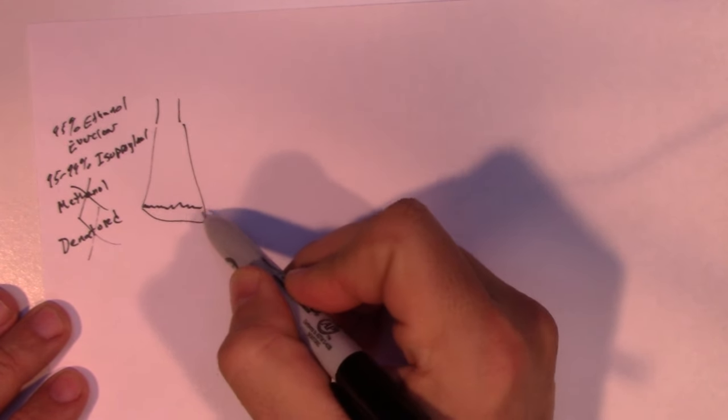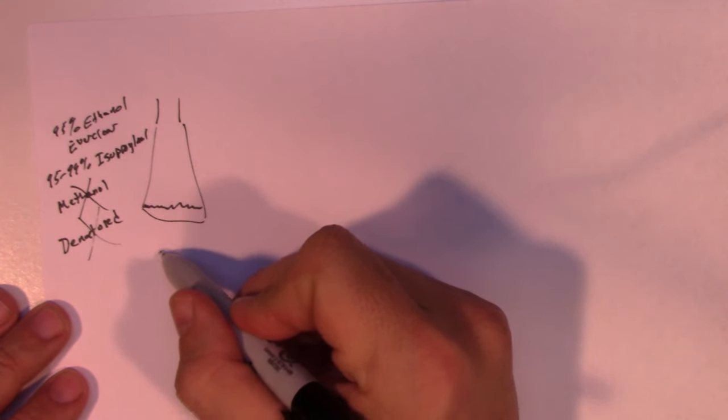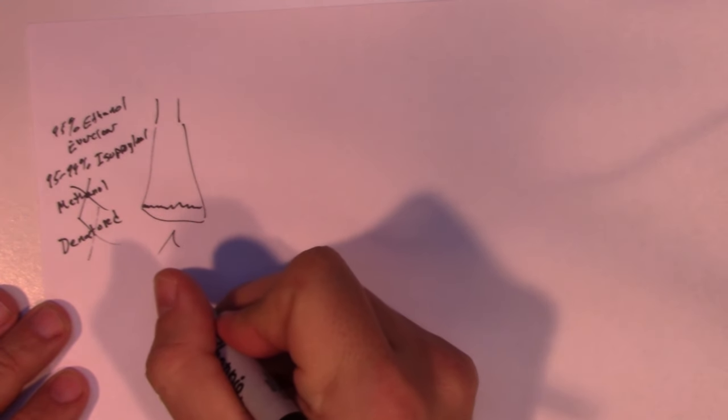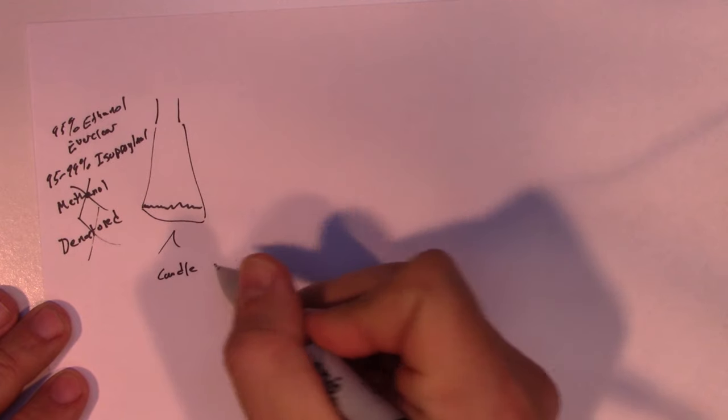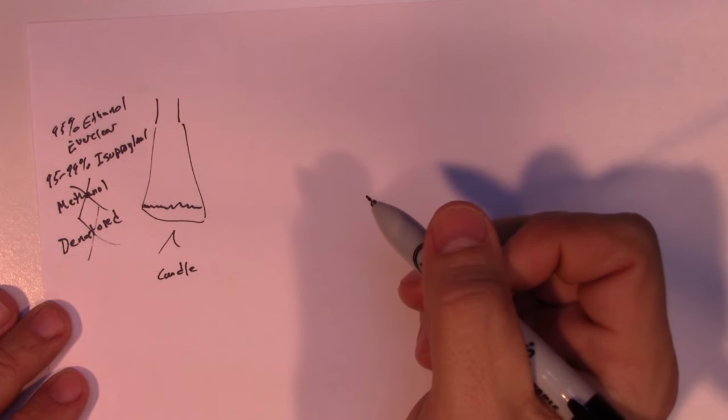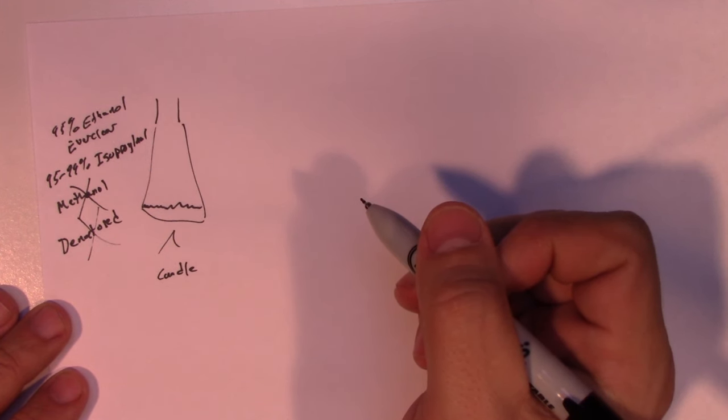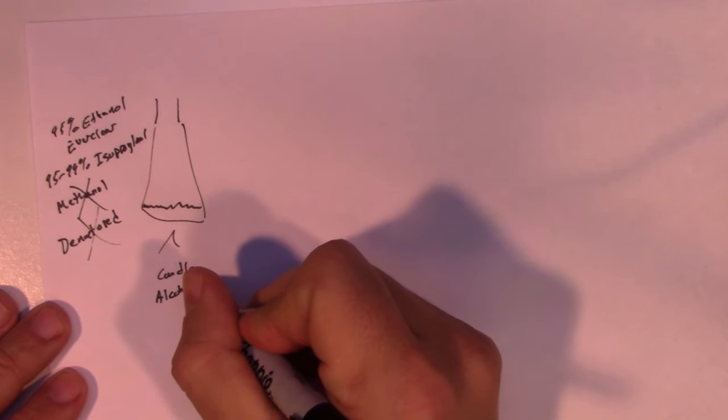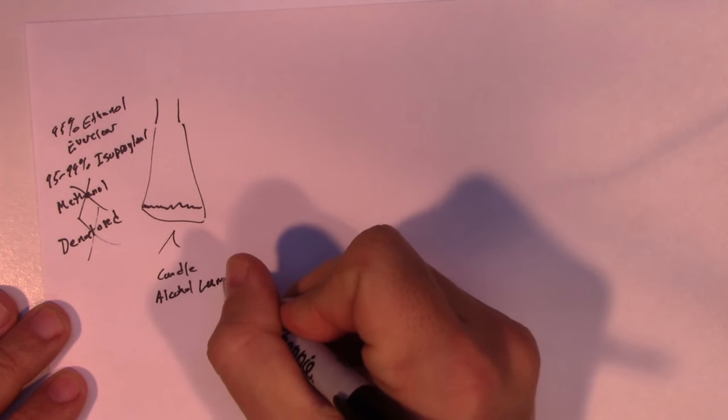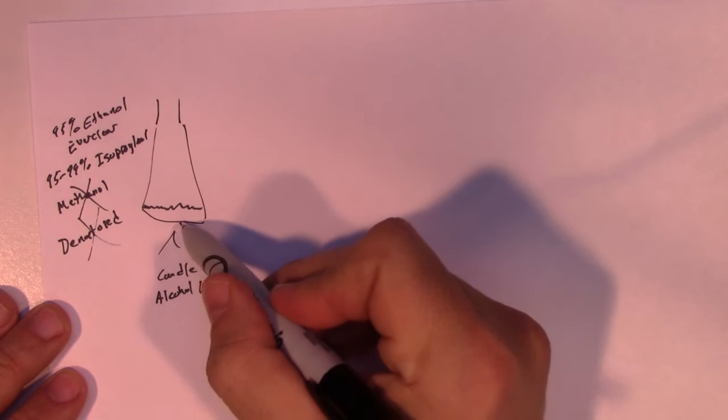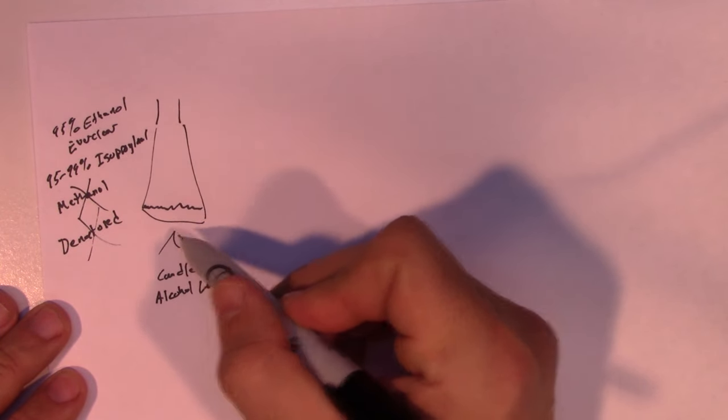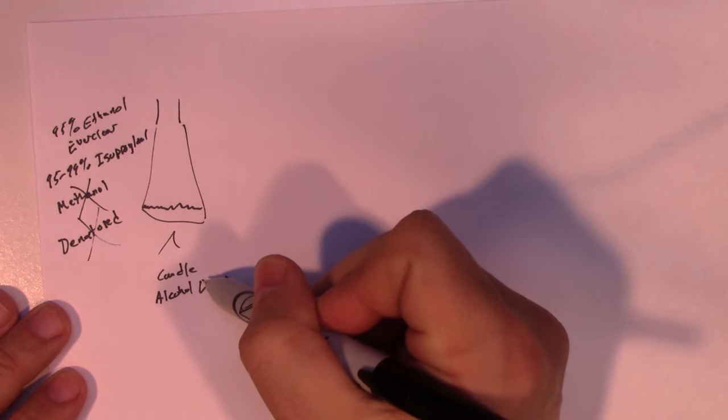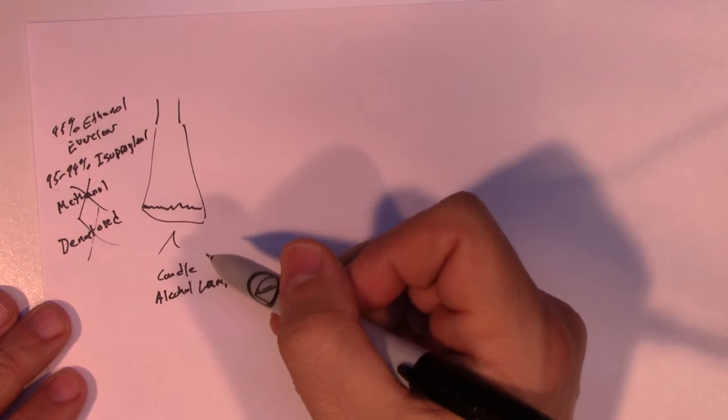So you have a flask with a bit of alcohol in it and then you need a heat source. For the heat source you can use a candle. Something like a little tea light candle works just fine, and that's a perfectly reasonable way to do this. I use an alcohol lamp as I've shown in other videos. The alcohol lamp is nice because since it's burning primarily alcohol there's much less soot that's deposited on the glassware. So in general I try to avoid the candle just because I don't want to have to clean the soot off the bottom. But both work fine.